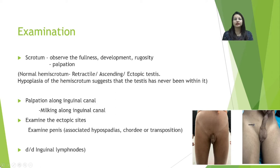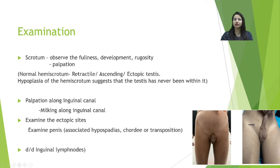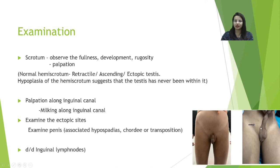Patients typically present to the OPD with unequal scrotal folds or inability to appreciate the testis in the scrotal sac. This is predominantly a clinical diagnosis. On examination, the scrotum should be observed for fullness, rugosity, and symmetry. In a case of unilateral undescended testis, one can appreciate that the two scrotal folds are unequal — one well-developed with fullness and a visible testis, while the other hemiscrotum is poorly developed with no fullness.